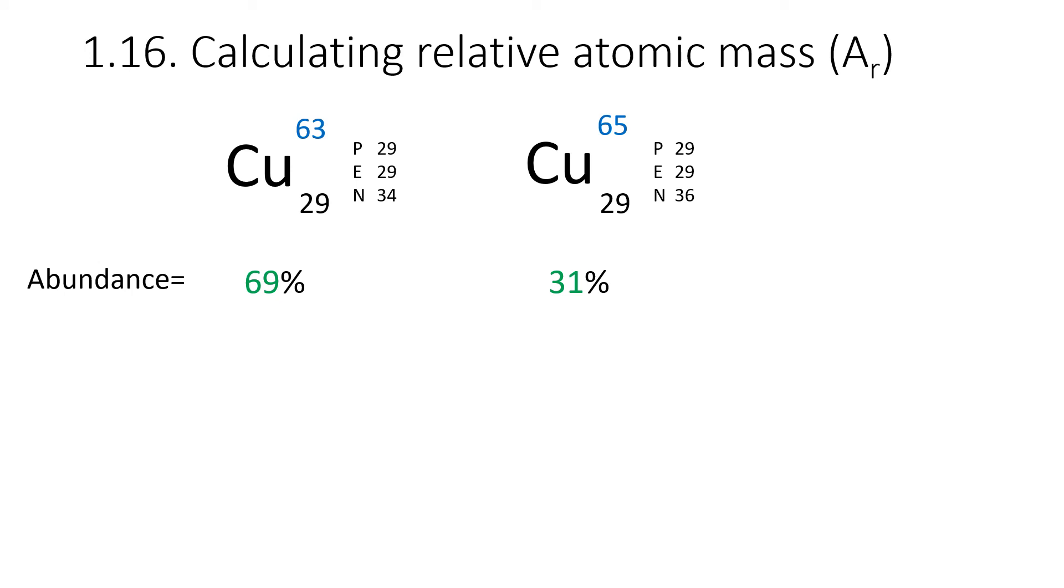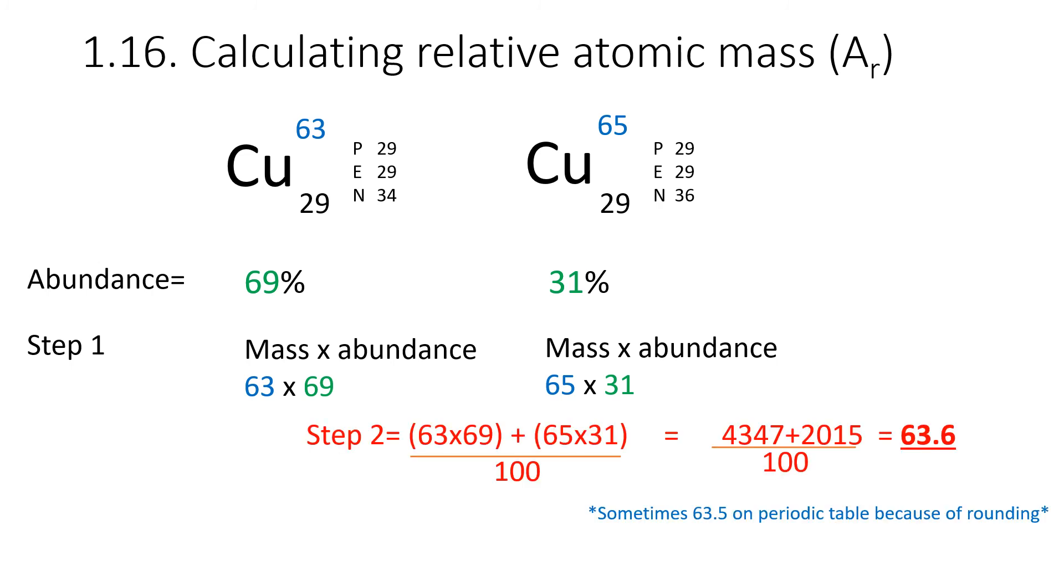Here's another example. Pause the video here and see if you can figure out the relative atomic mass of these two isotopes of copper. Step one was to multiply the mass of each isotope by its abundance. So we would do 63 multiplied by 69, and we would do 65 multiplied by 31. We would then add these two numbers together and divide by 100. And what we would get is 63.6. You might see on the periodic table 63.5, and that's because of rounding.